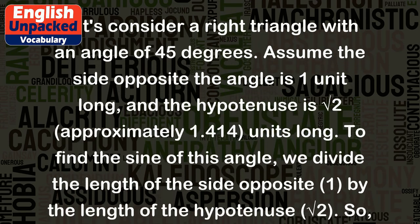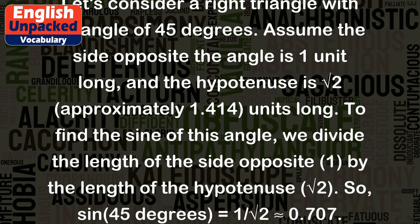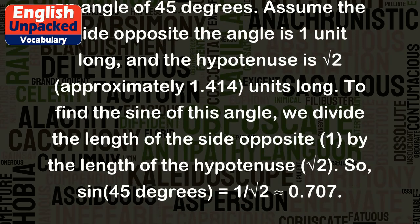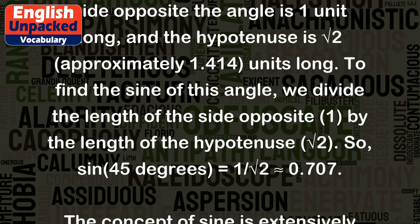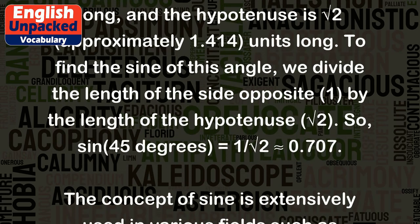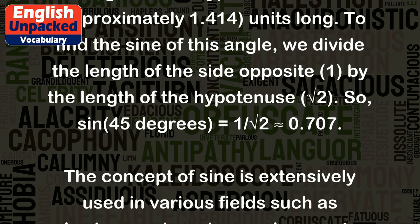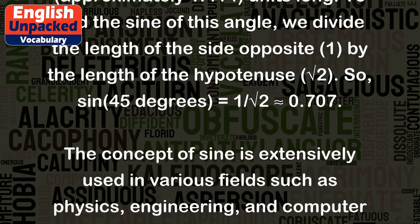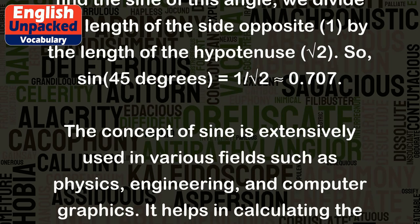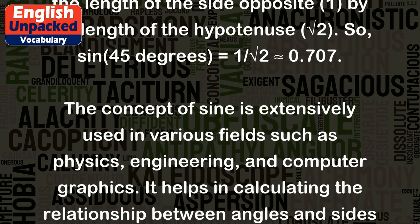To find the sine of this angle, we divide the length of the side opposite (1) by the length of the hypotenuse (√2). So, sin(45 degrees) = 1/√2 ≈ 0.707.